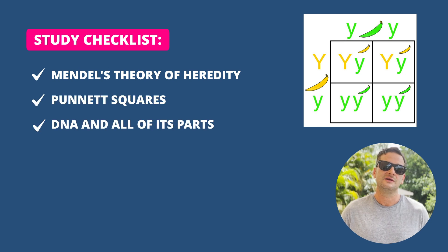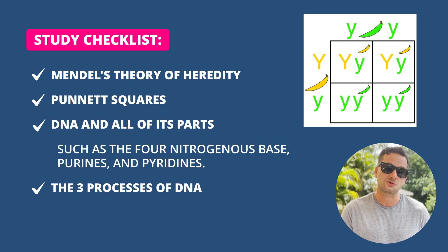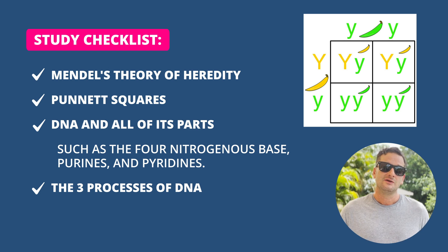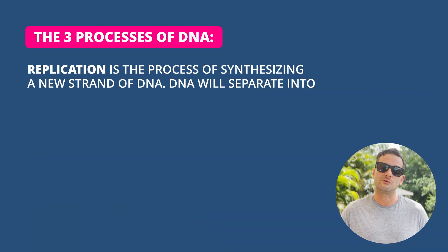For genetics and DNA, you'll need to know Mendel's theory of heredity and what that theory is, along with Punnett squares. Know DNA and all of its parts, such as the four nitrogenous bases — purines and pyrimidines. There are three key processes of DNA to understand.